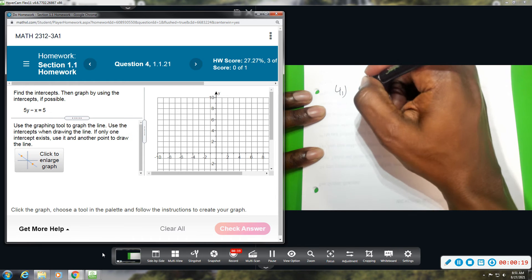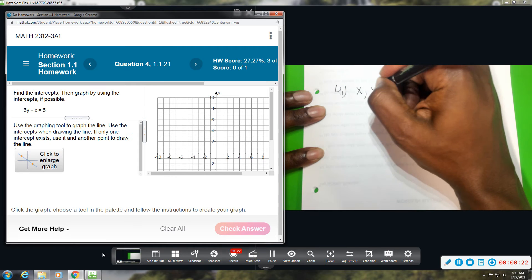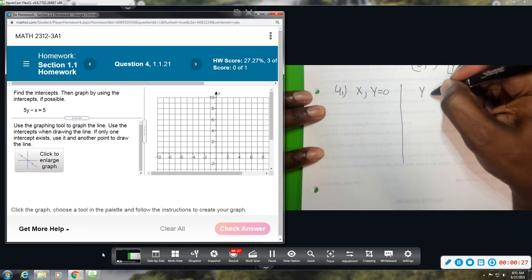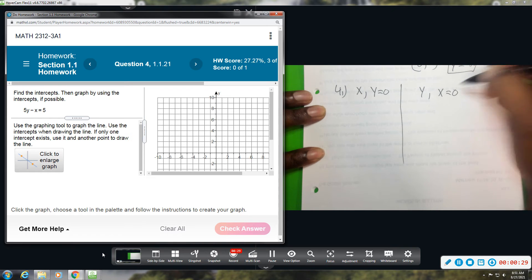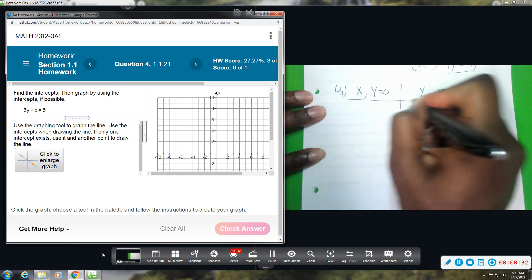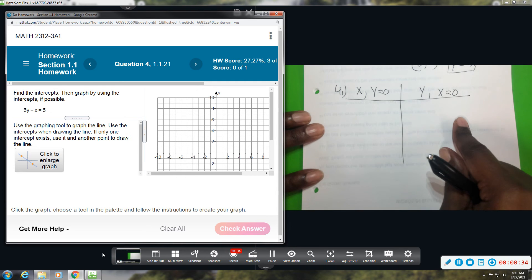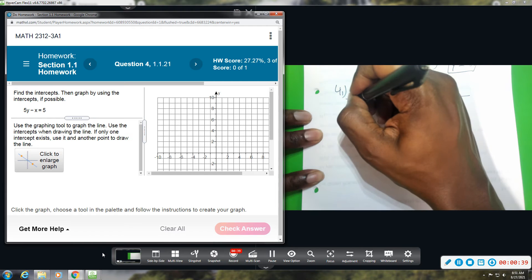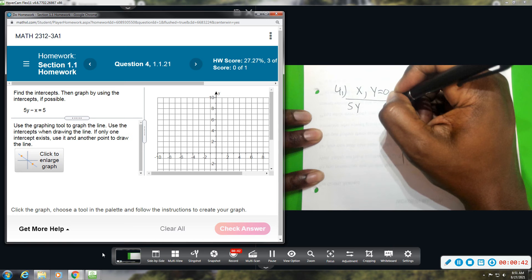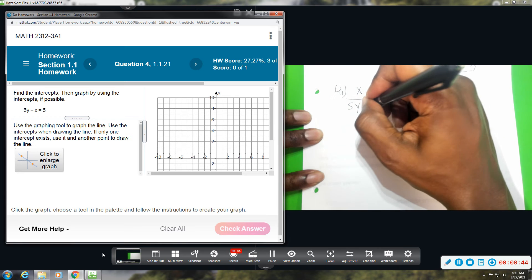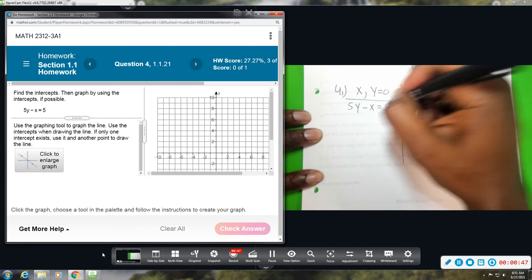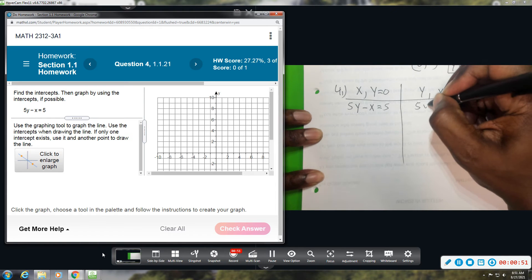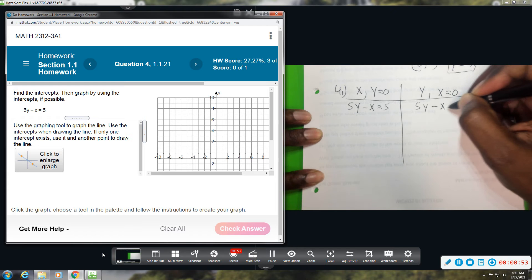So for right now, we're going to find the intercepts. So I'm going to find the x, which means y equals zero. And then I'm going to find the y, which means we're going to plug a zero for x. That's the main thing you need to remember. The opposite coordinate is going to be zero when you're finding the intercepts. Okay, so our equation, 5y minus x equals 5. And then I'm going to write the equation again on the other side, 5y minus x equals 5.